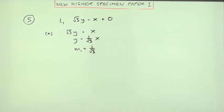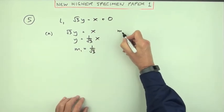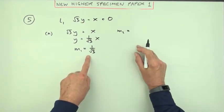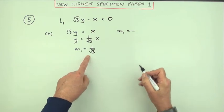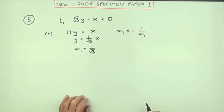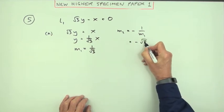Which means that for line two, if it's to be perpendicular to that, then m₂ will be the negative of the reciprocal of it, because the two of them multiply to give negative one. So it'll be negative √3.